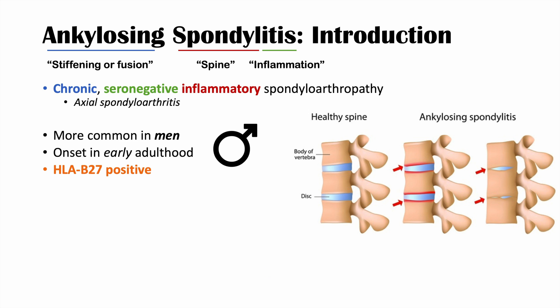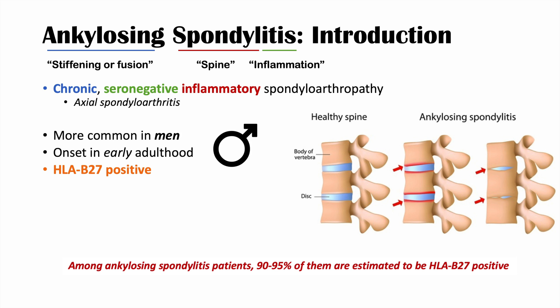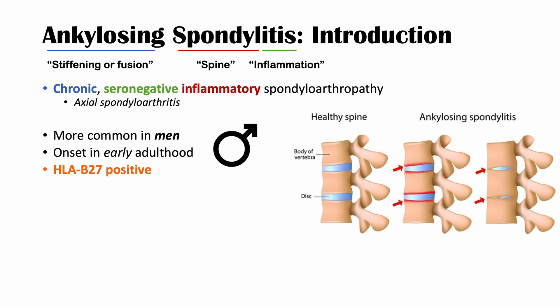What's key to know about ankylosing spondylitis is that the majority of cases are HLA-B27 positive. If we check a patient's HLA-B27 status, they're more likely to be positive — anywhere from 80 to 90% of cases have this positive blood finding. This also ties in with family history, since this is a family trait.